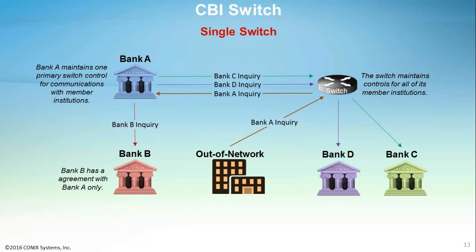The CBI switch technology facilitates communication between all participating or cooperative institutions. With the switch technology, each member maintains one connection for communication with the switch. This covers communication with any other institution that communicates through the same switch. The diagram shows bank A communicating through the switch with inquiries targeted at banks C and D, both of which have CONICS solutions installed. Institutions can opt not to use the switch, illustrated by bank A and bank B having a direct bank-to-bank communication. In this case, the institutions must maintain the controls needed for communicating with each other. Again, bank B would have CONICS duplicate or fraud detection solutions.